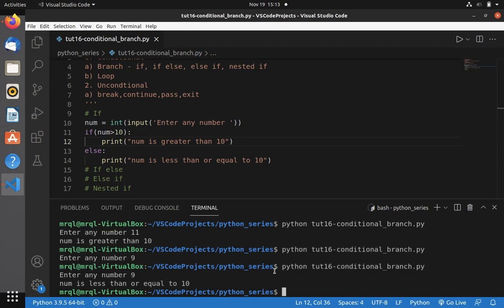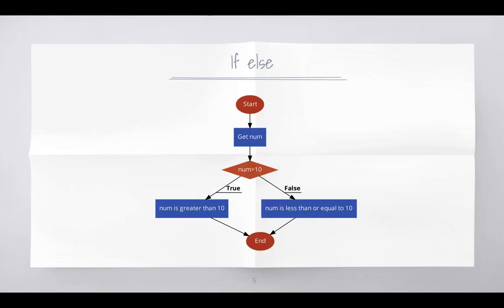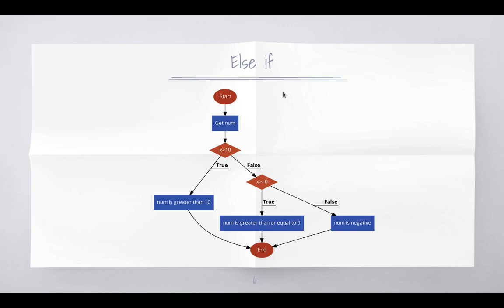Now let me move into else-if. This is the example I am going to show you. We check if num is greater than or equal to 0 — if so, print 'num is greater than or equal to 0'; otherwise print 'num is negative'. This we are going to implement in Python.